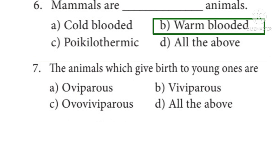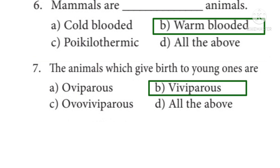Question 7: The animals which give birth to young ones are — Options: A. Oviparous, B. Viviparous, C. Ovo-viviparous, D. All of the above. The answer is Option B: Viviparous.